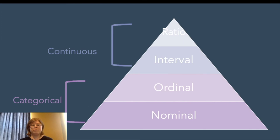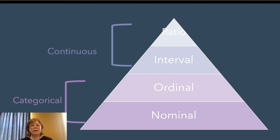Another example of a categorical variable would be religion. The values it could take are finite — Christian, Buddhist, Hindu, Jewish, Muslim, Jain, native religions, etc. But all of them are equally religions; one is not more religion than another. A simpler example would be flavors of ice cream — chocolate, vanilla, strawberry, or butter pecan. They're all equally flavors of ice cream. We can't meaningfully order them.